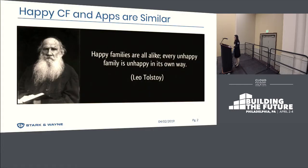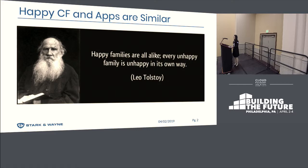Tolstoy has a famous quote: happy families are all alike, every unhappy family is unhappy in its own way. I think it fits very well with CF. If everything is working, they are probably similar. If something is broken, good luck trying to figure out what exactly went wrong.